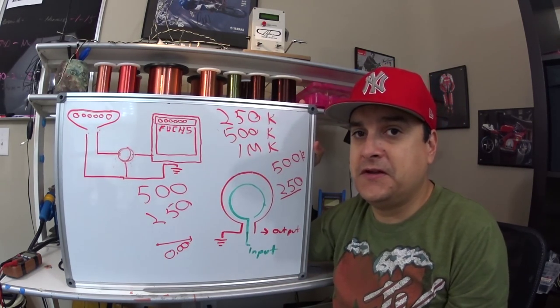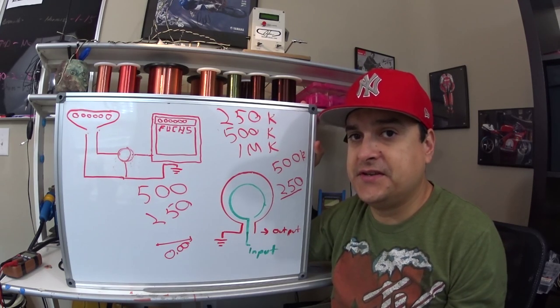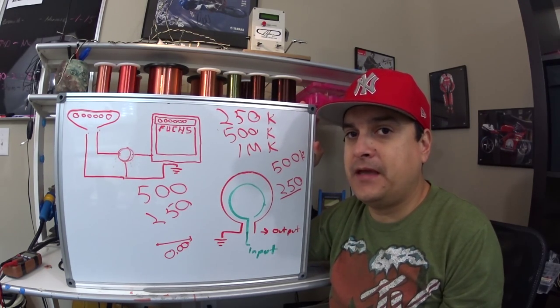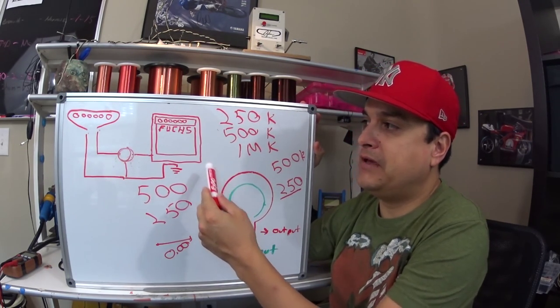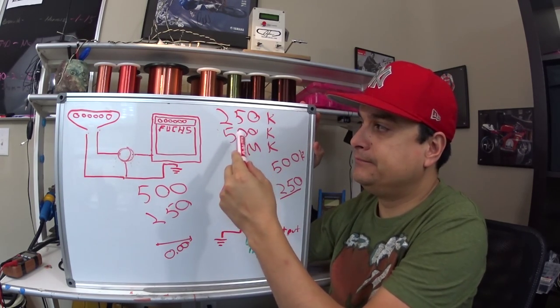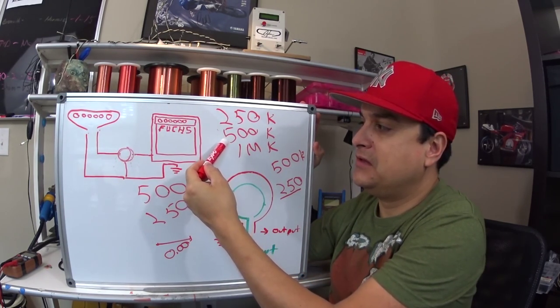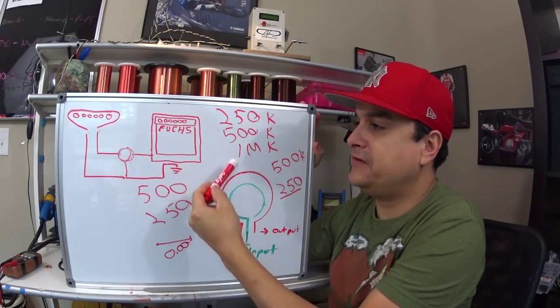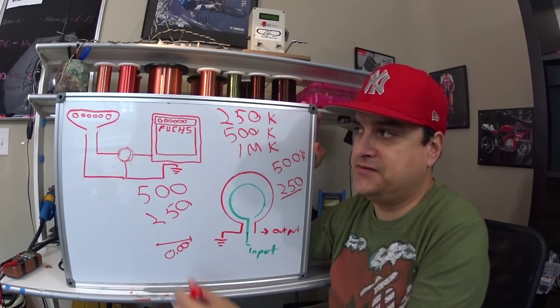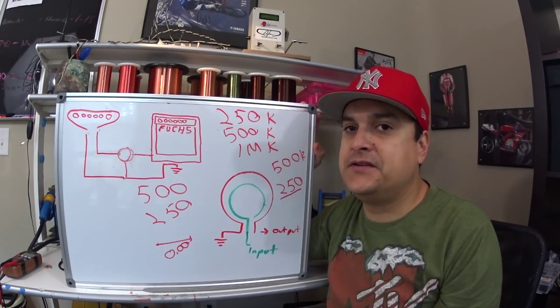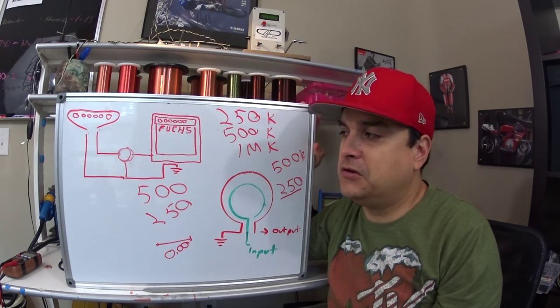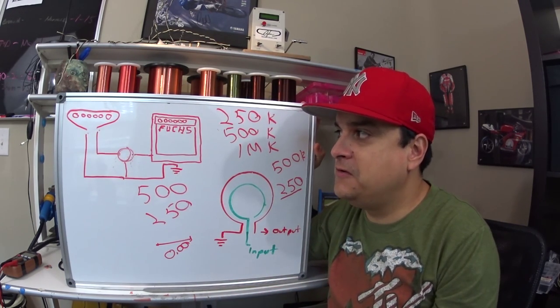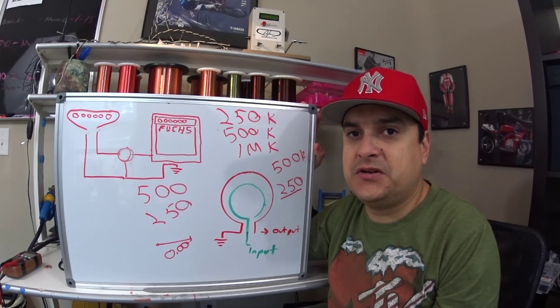Next time we'll talk about tone pots and tone caps and how those factor in and how we can basically make all of this a whole different combination with a different capacitor and a 500k pot and a single coil pickup. There's all kinds of different combinations you could do. So you can throw everything you ever learned out the window and explore some new territory and it'll be a lot of fun.